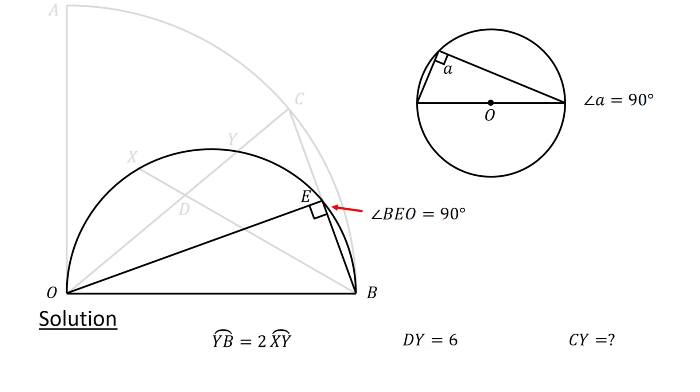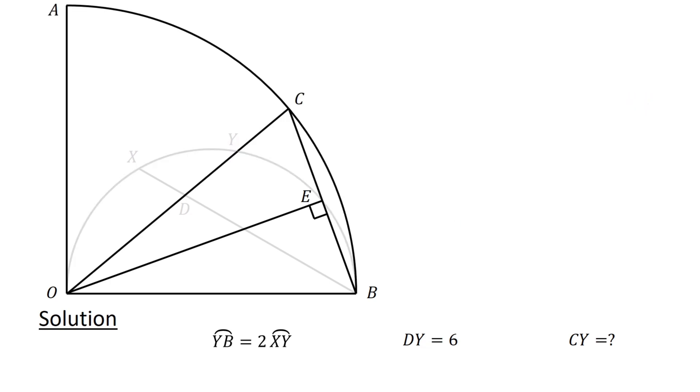Next, consider triangle OBC and the quarter circle. Since OC and OB are the radii of the quarter circle, we have OC equals OB. Thus, triangle OBC is an isosceles triangle. Therefore, OE, which is the height of the triangle, bisects the vertex angle, which is angle COB.